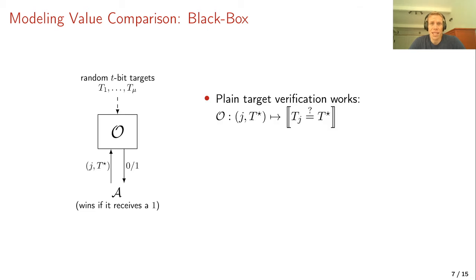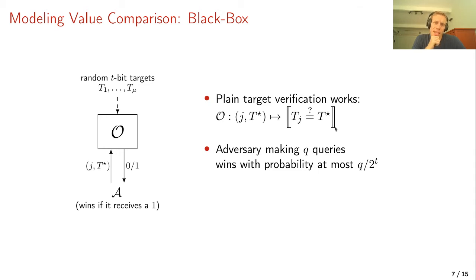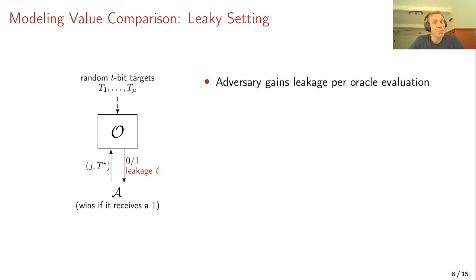In the black box setting, plain value verification works. We define the oracle as a function that takes input (j, t*) and simply compares t_j with t*: if equal it returns one, otherwise zero. One can prove that if the attacker makes q queries, its success probability is at most q over 2^t.